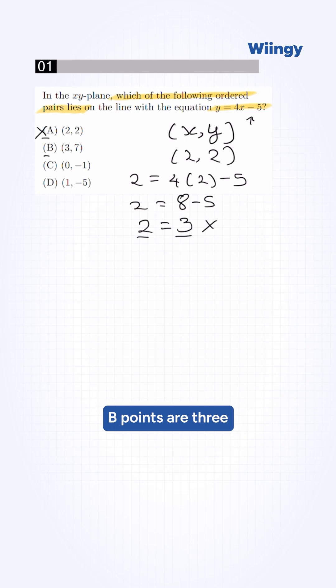Now we try for B. B's points are (3, 7). We plug this into our equation. It will be 7 = 4(3) - 5. So 7 = 12 - 5. 7 = 7. Here left-hand side is equal to right-hand side. This is our answer. The correct option will be B.